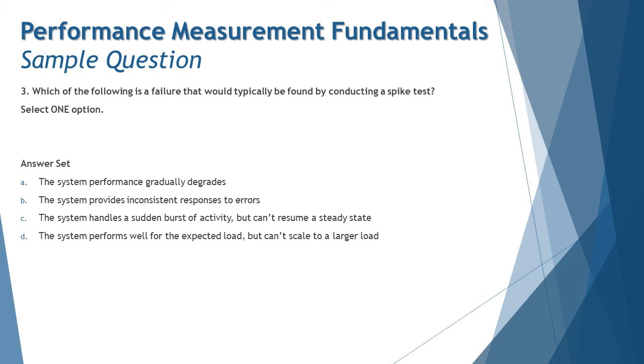Option C: the system handles a sudden burst of activity but can't resume a steady state. This seems to be absolutely the definition of spike testing and definitely talking about the outcome of a spike test which can be seen as a problem.